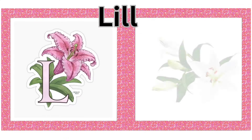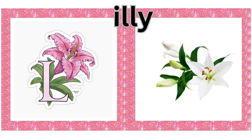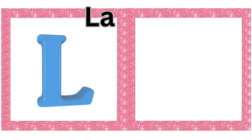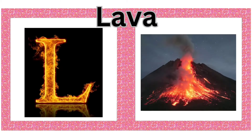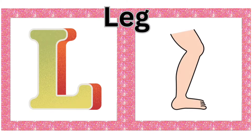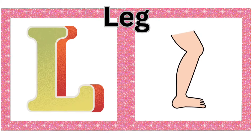J is for January. J is for jelly. J is for Jupiter. J is for jacket. J is for jackfruit.